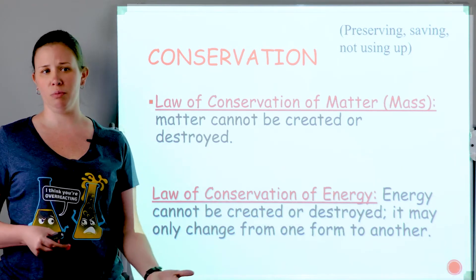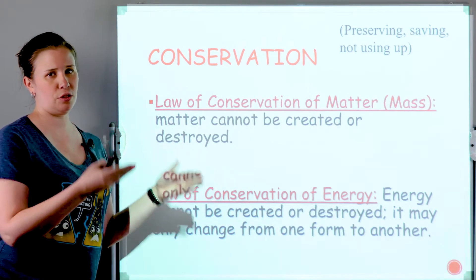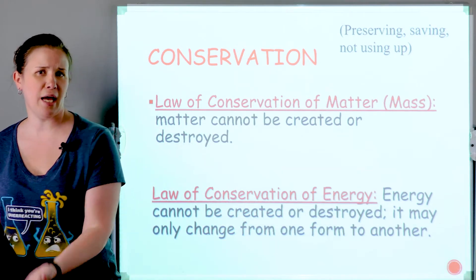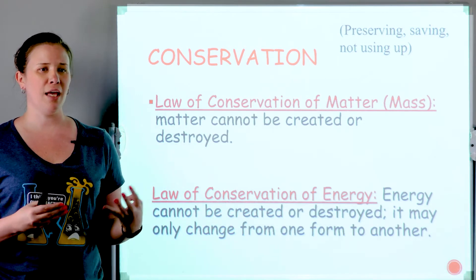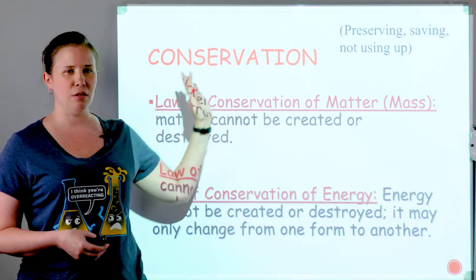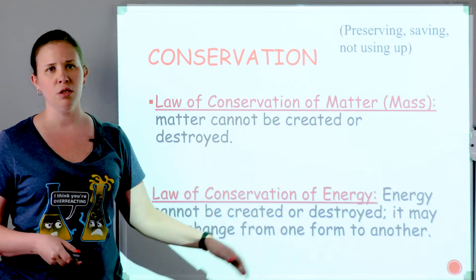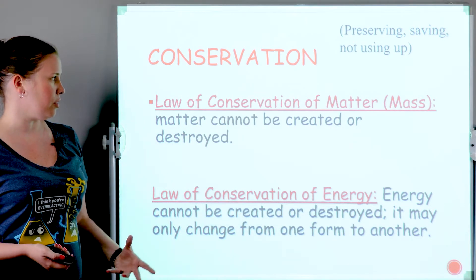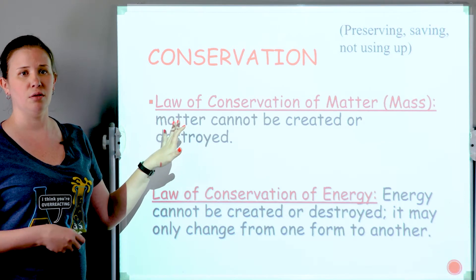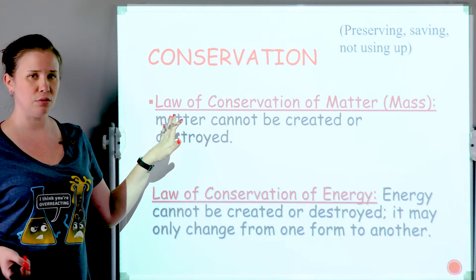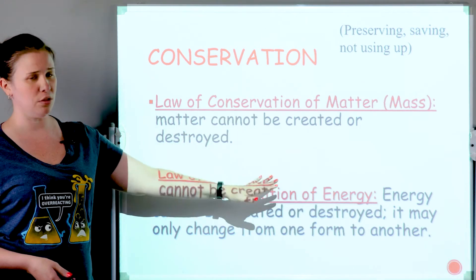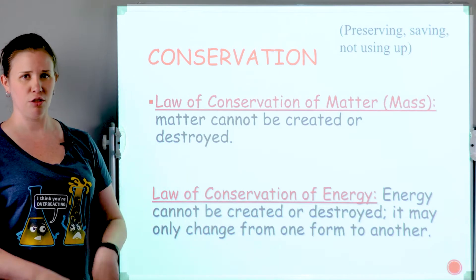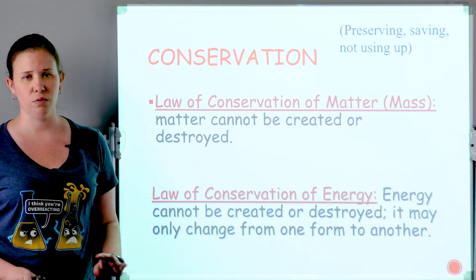But it doesn't mean it can't be transformed. For example, potential energy turning into kinetic energy, or wood turning into soot and ash when you burn it. There can be a transformation, but the amount of atoms or the amount of energy needs to be consistent in the entire system. Remember, laws are things that are observed — things that are factual. There's no arguing with a law. It is a factual observation that matter does not just magically disappear and energy doesn't magically appear. It's conserved, no matter what.